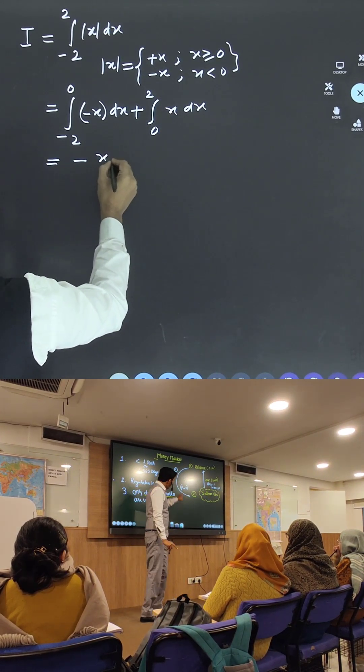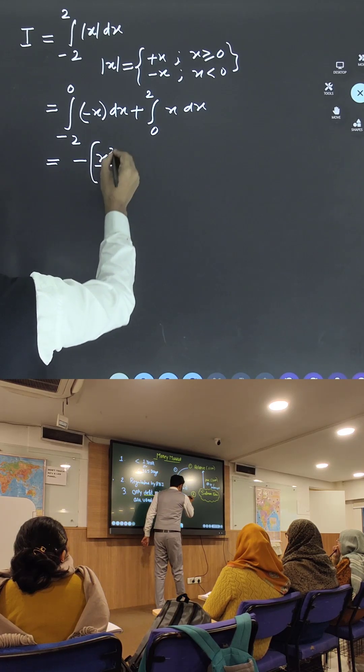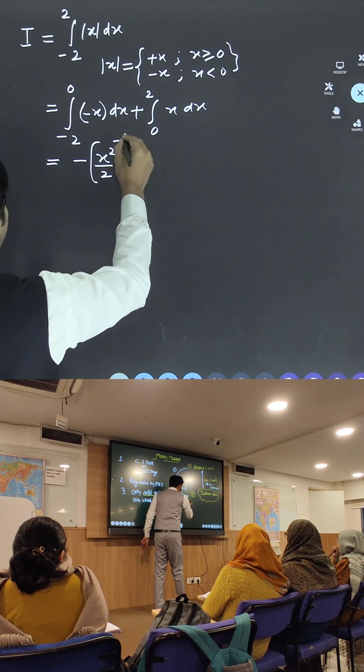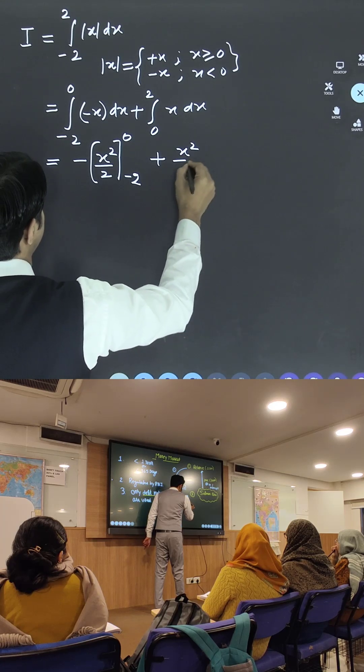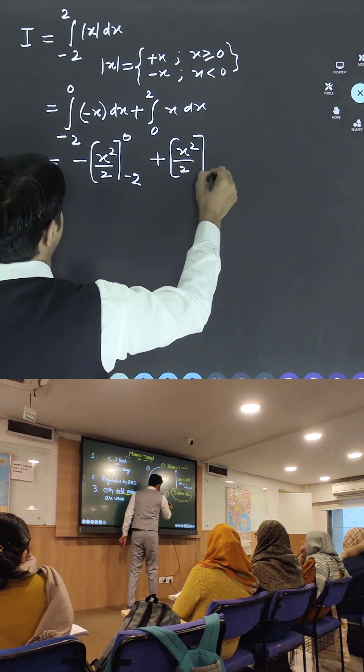So this comes out to be minus is outside, x square by 2, limits are from minus 2 to 0, plus this is x square by 2. What is the limit? Limit is from 0 to 2.